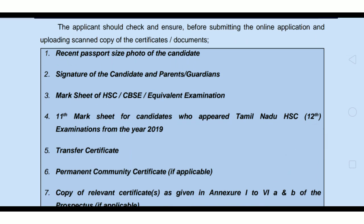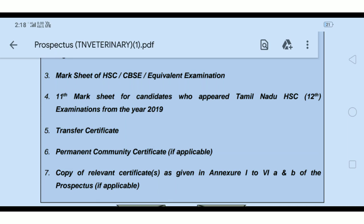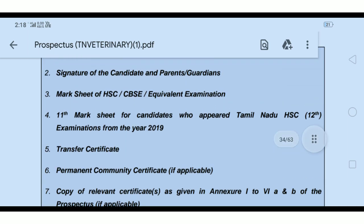The first document is the signature of the candidate, and then your parent or guardian. You have the signature. Take one A4 sheet — most of you have your name as your signature, because the signature varies. You can write your name, even in cursive, as your signature. You can go to the browsing center, crop it, and upload it. In the browsing center, you can get a signature on A4 sheet.